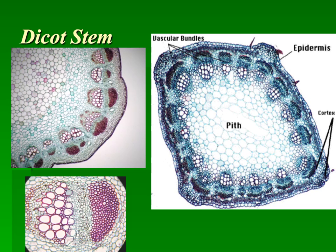With the dicot stem, you need to be able to look at it and identify the dicot stem and the vascular bundles. The vascular bundles here look like nuts.